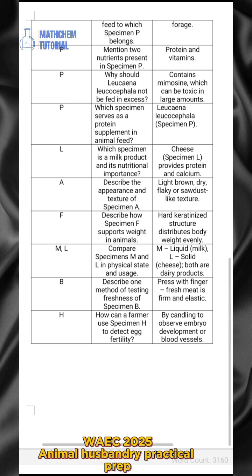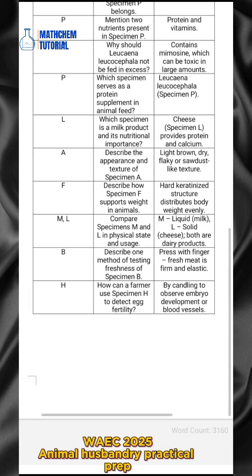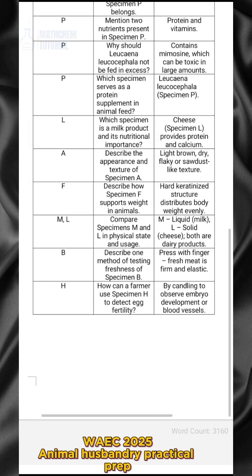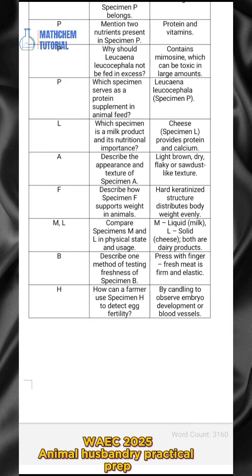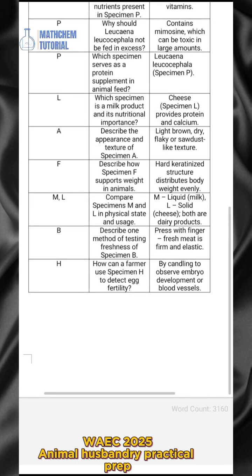For specimen F, describe how specimen F supports weight in animals. The answer is: it is a keratin structure that distributes body weight evenly. For specimens M and L, compare them in physical state and usage. Specimen M is liquid and is milk. Specimen L is solid and is cheese.